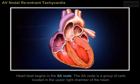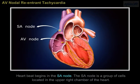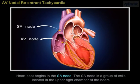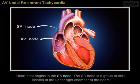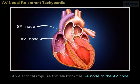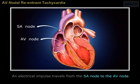A heartbeat begins in the SA node. The SA node is a group of cells located in the upper right chamber of the heart. An electrical impulse travels from the SA node to the AV node.